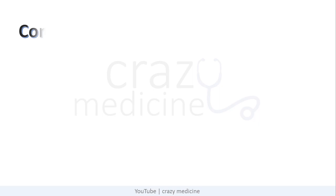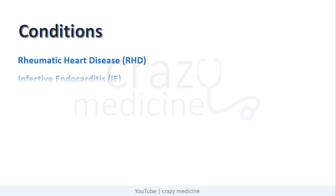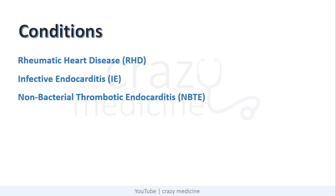Basically there are 4 conditions you need to remember which produce vegetations around the heart valves or leaflets of valves. They are rheumatic heart disease, infective endocarditis, non-bacterial thrombotic endocarditis, and Libman-Sacks endocarditis.